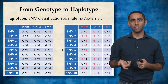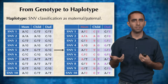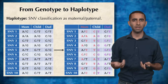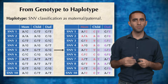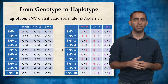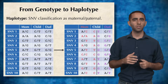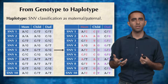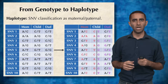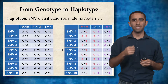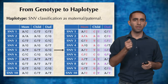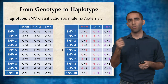Unfortunately, genotype information isn't enough to tell us very much about how a child's disease might have happened, and we specifically want to learn more about the inheritance of each of the SNPs. Aside from de novo variations, a child must have inherited each one of his SNVs from either the mom or the dad.